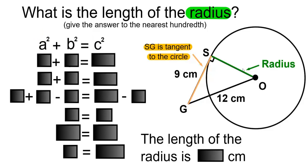Our C will always be the line opposite of the right angle. So in this case, our C will be 12 centimeters.